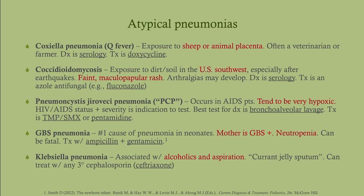Coxiella pneumonia, or Q fever (Coxiella burnetii), is typically seen in veterinarians or farmers with exposure to sheep or animal placenta. Diagnosis is by serology; treatment is doxycycline. A useful tip: if a question involves an animal or tick source, doxycycline is probably the right answer. Coccidioidomycosis, also known as San Joaquin fever or valley fever, occurs in the U.S. Southwest, especially after earthquakes which dislodge the fungus from the ground. Patients often have a faint strawberry-colored maculopapular rash and arthralgias. Diagnosis is serology; treatment is antifungals, namely fluconazole.